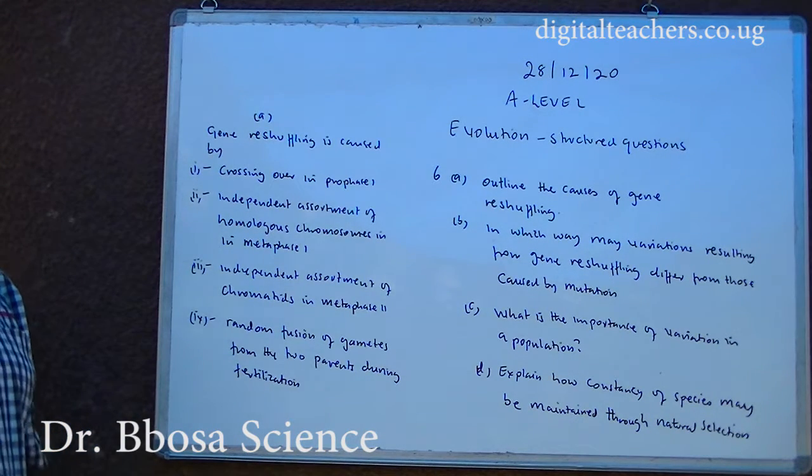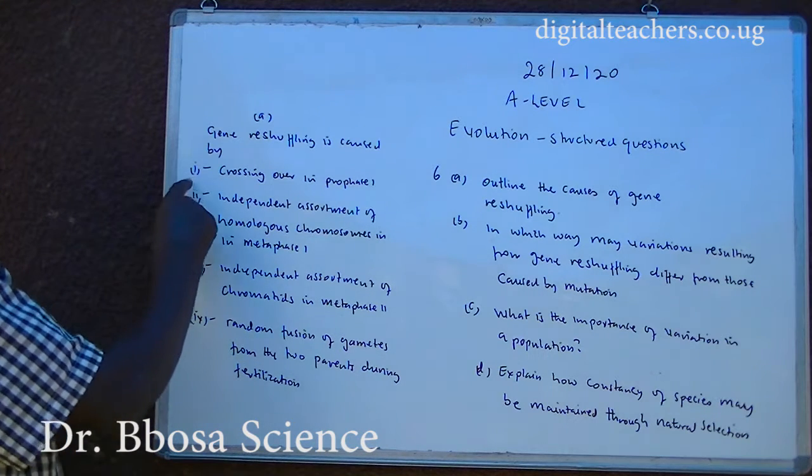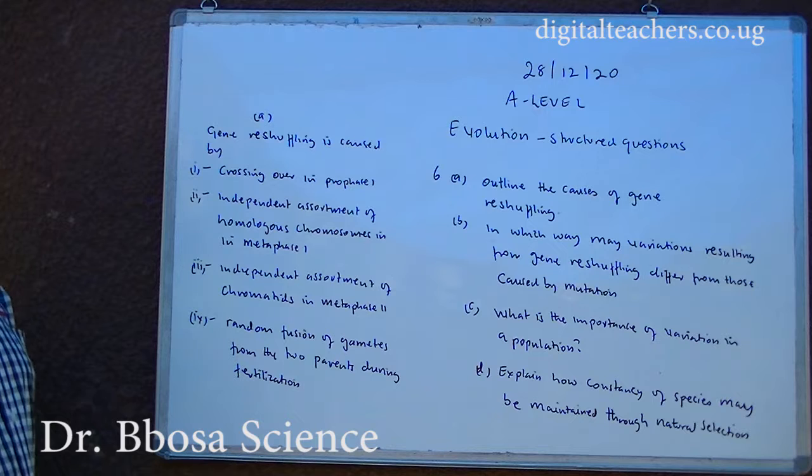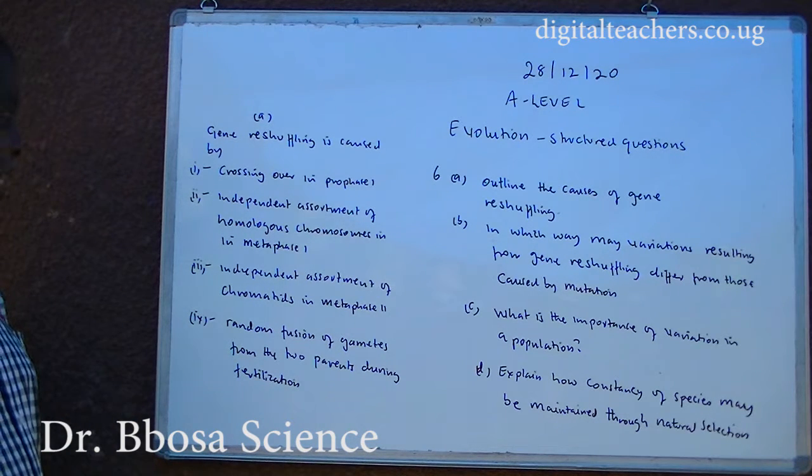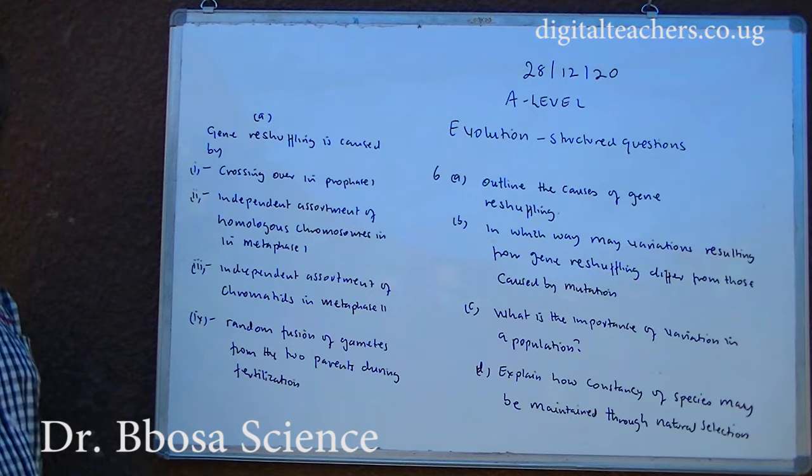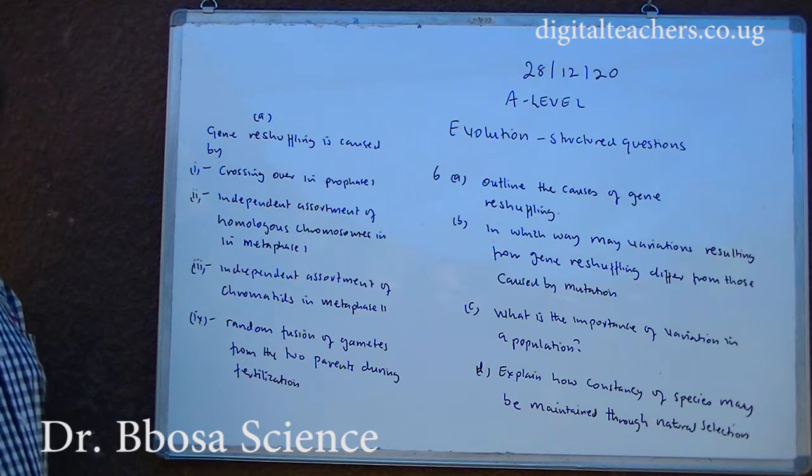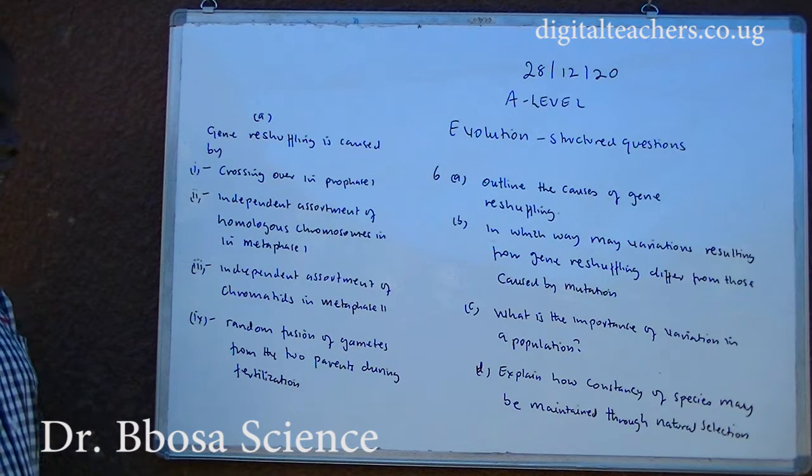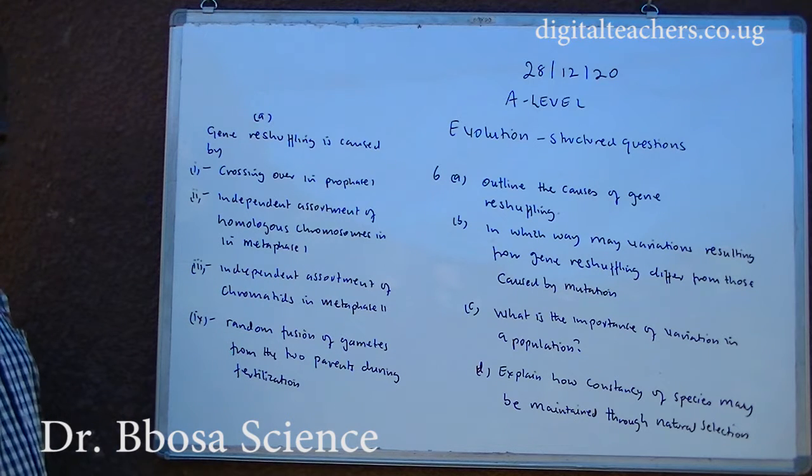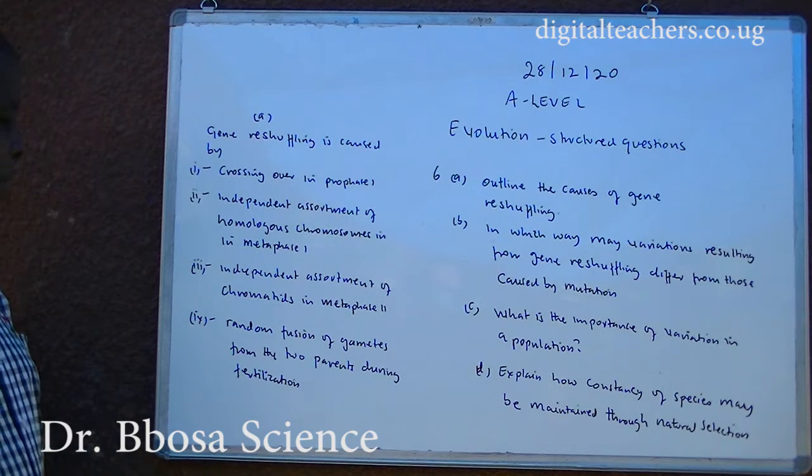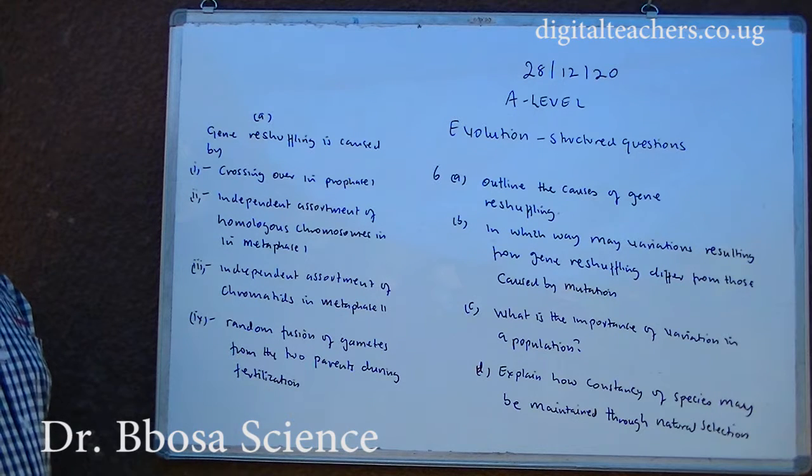A. Gene reshuffling is caused by: Number one, crossing over in prophase 1. Number two, independent assortment of homologous chromosomes in metaphase 1. Number three, independent assortment of chromatids in metaphase 2. Number four, random fusion of gametes from the two parents during fertilization.